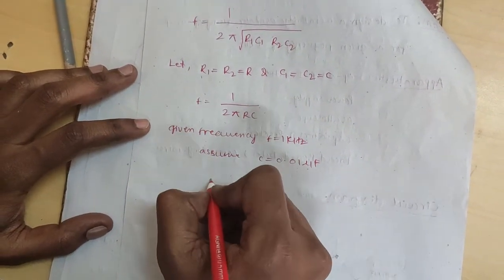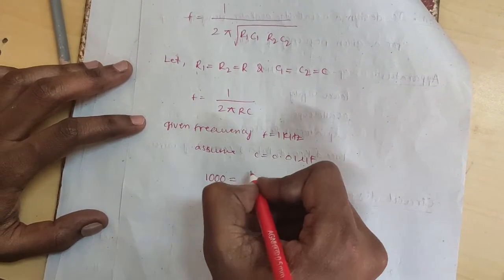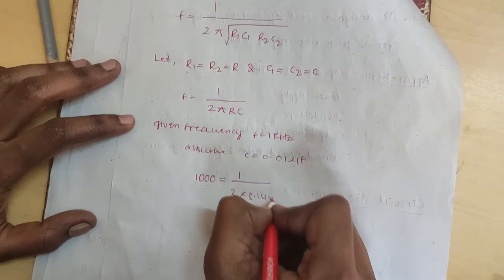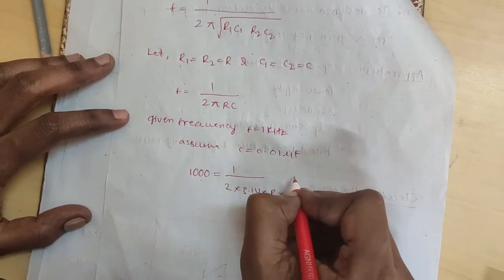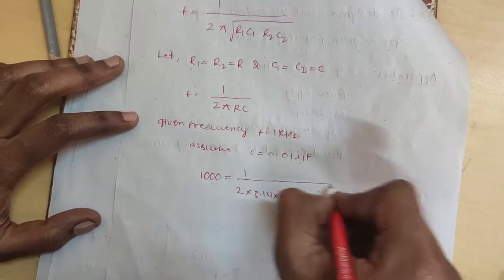f equal to 1 by 2 pi RC. f is 1000 Hz, 1 by 2 into 3.14 into R into C, 0.01 times 10 to the power of minus 6.